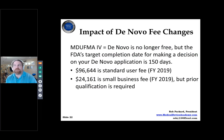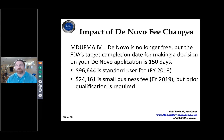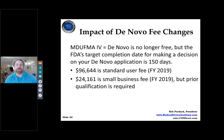De novo submissions used to be free, incentivizing companies with novel devices to use that pathway. Now de novo has a higher fee than 510k, so companies try to fit novel devices into the 510k pathway — and the FDA has financial incentive to classify borderline devices as de novos. The de novo timeline has come down from up to two years; the average is now around 170 days with a target of 150 days under MDUFA.